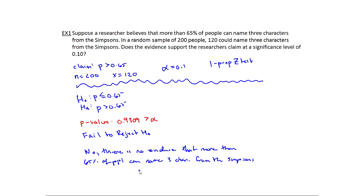You're probably starting to notice a pattern with hypothesis testing. With the p-value method, everything stays the same, but where I get the p-value from changes. When we do the rejection region method, everything will stay the same, but where I get the rejection region will change. That's because depending on what we're testing and what type of test we're doing, the distribution for the sampling statistic might be different — and that's how we determine our p-value or rejection region. But in the end, the general procedure is always the same.